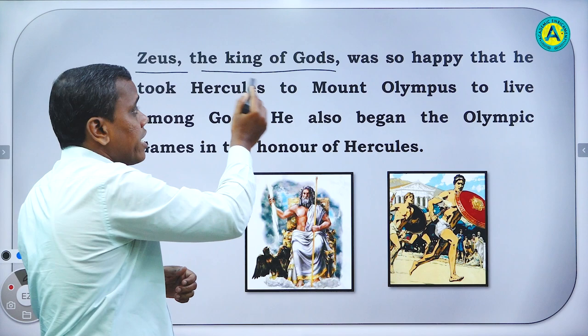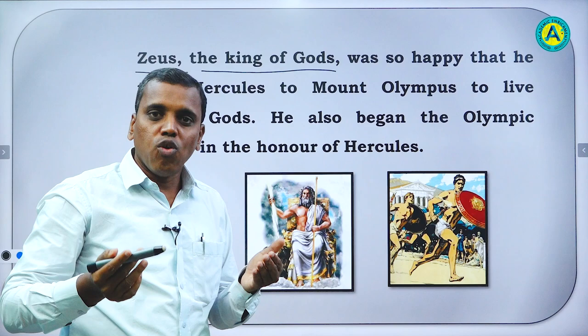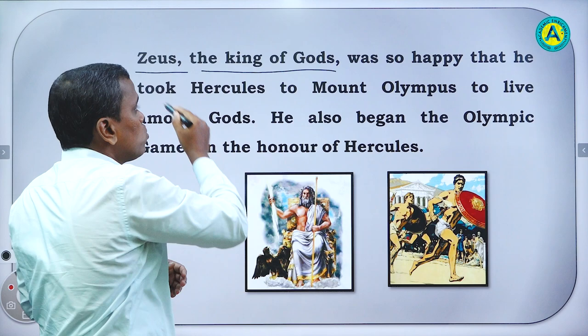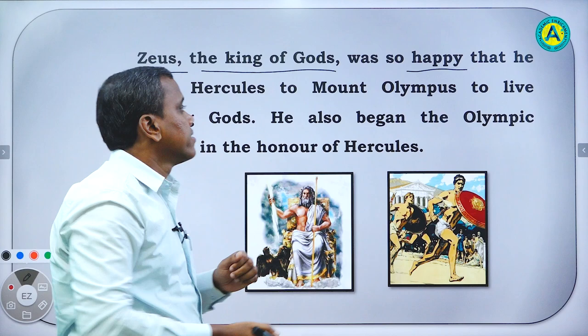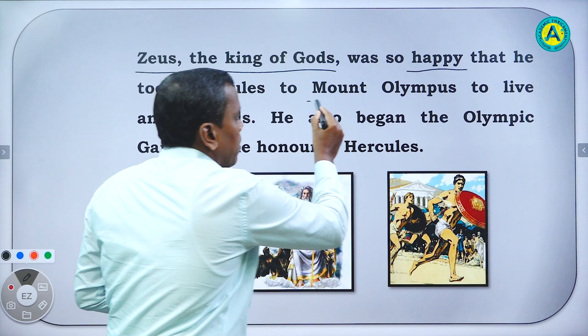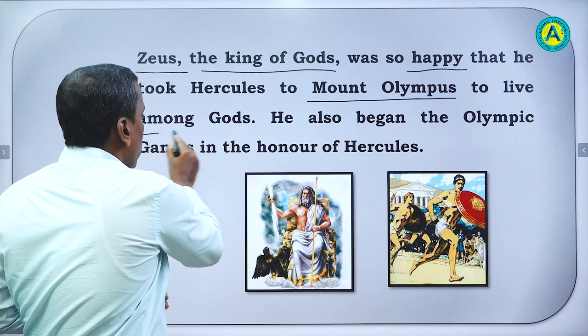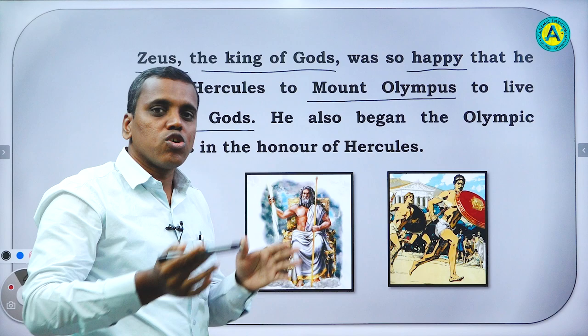Like we have Indra in our folk tale — Indra is the king of gods. Similarly in Greek mythology, Zeus was the king of gods. And he was so happy because Hercules completed those 12 difficult dangerous tasks. So he took Hercules — where? To Mount Olympus, to live among gods who lived in Mount Olympus. Hercules also lived there with the gods.